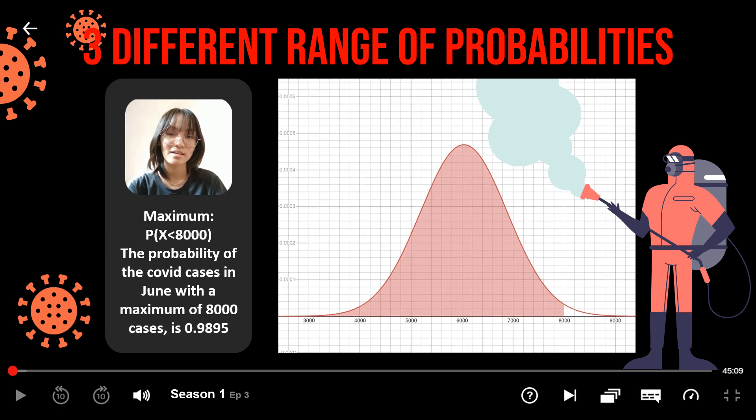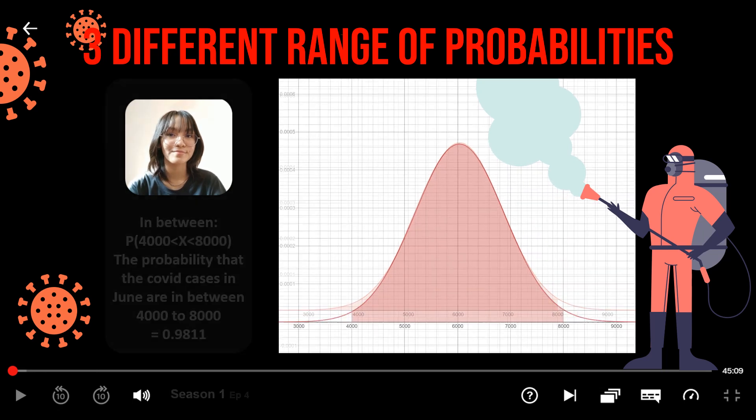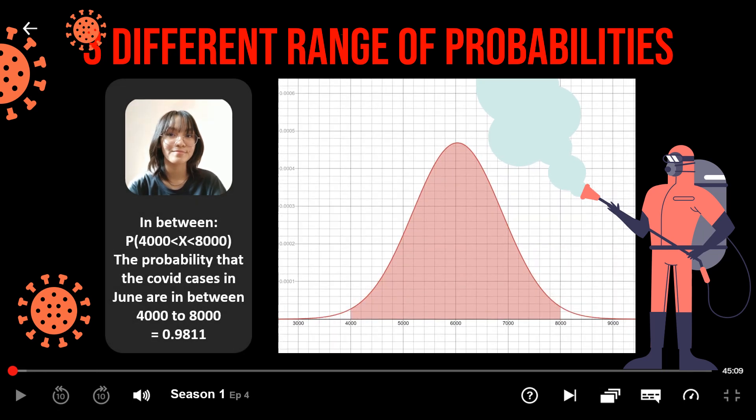Next, the probability of COVID cases in June with a maximum of 8,000 cases is 0.9895. And finally, the probability of COVID cases in June that ranges between 4,000 to 8,000 is 0.9811.